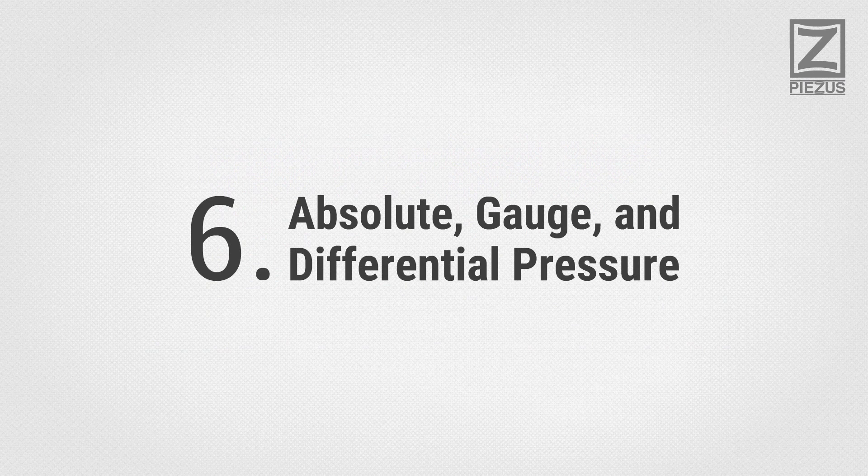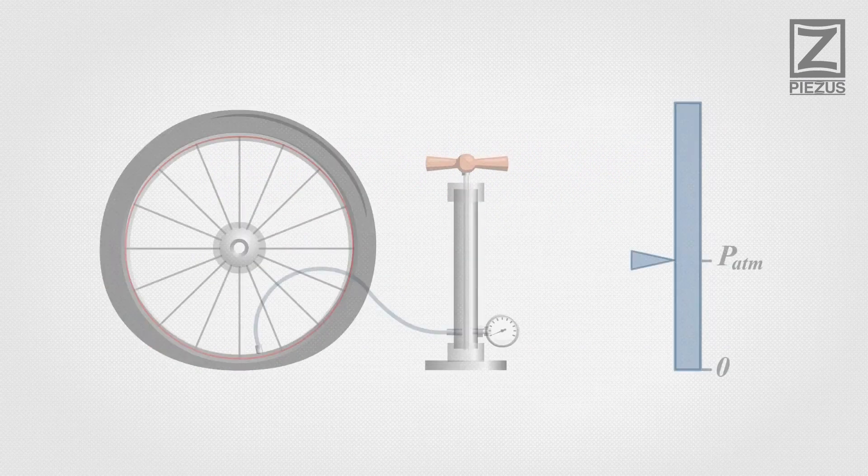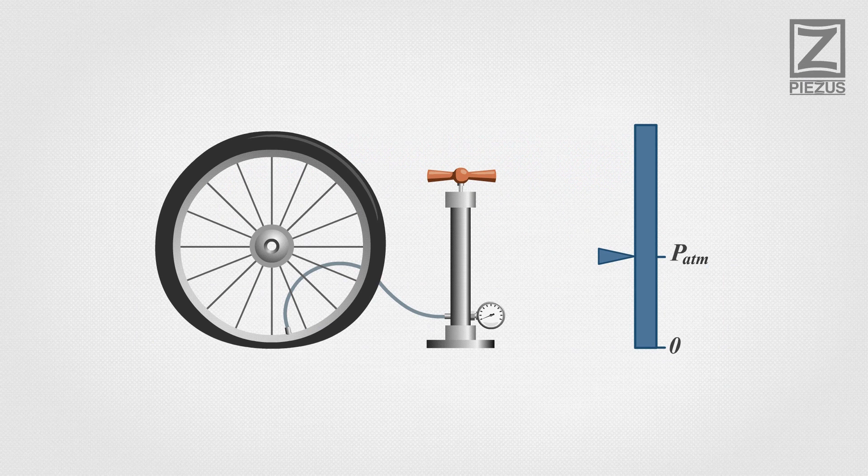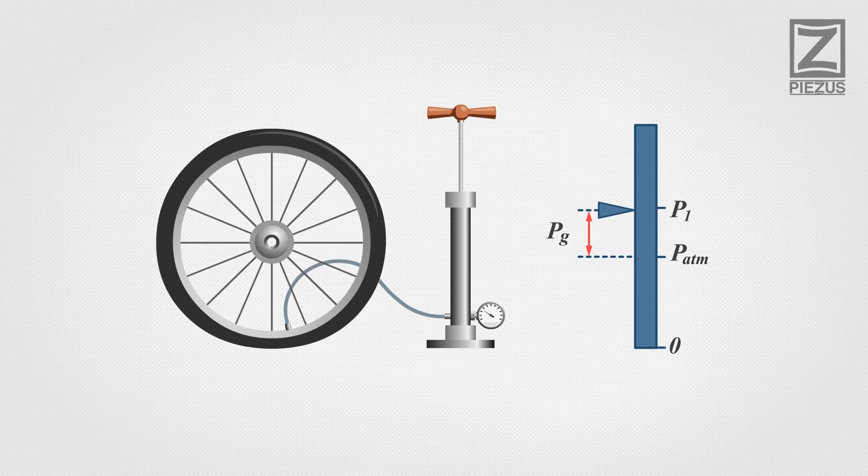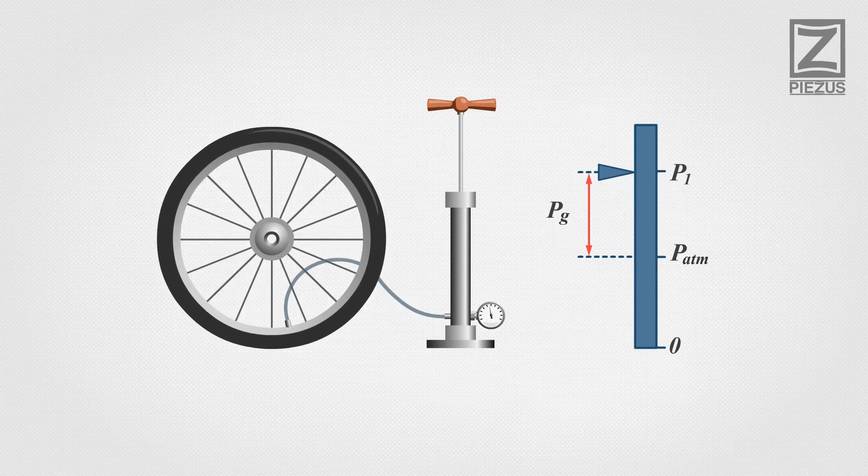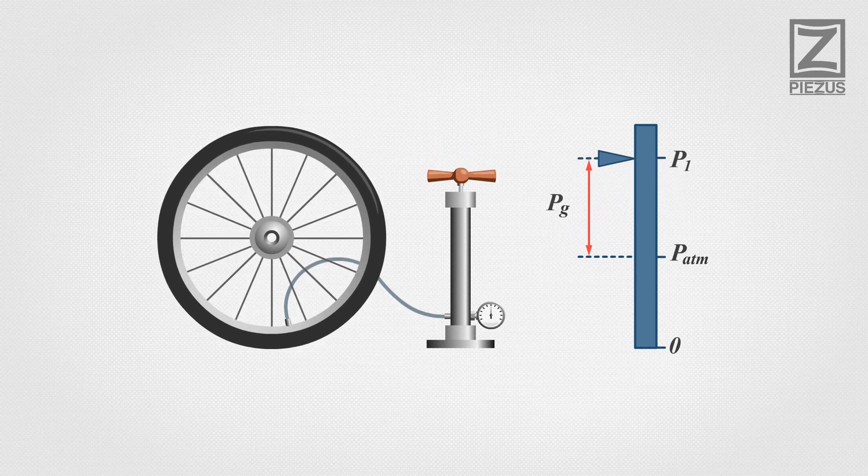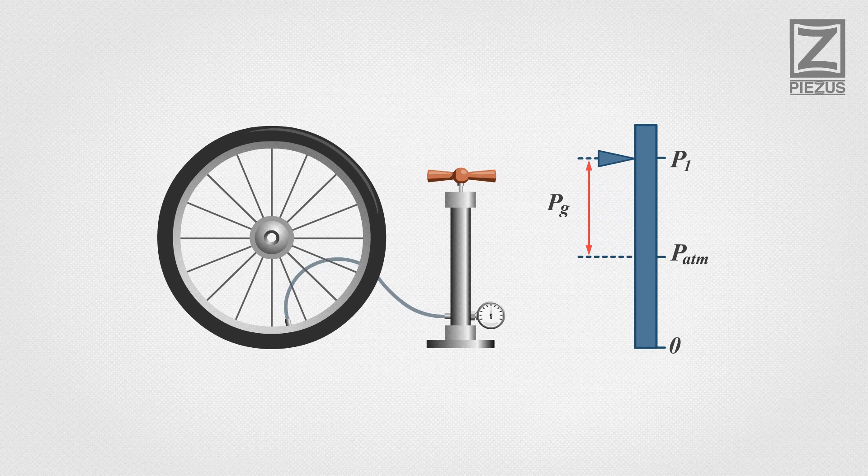Absolute, gauge, and differential pressure. Many everyday pressure measurements are usually made relative to ambient air pressure. This is the way to measure blood pressure or a vehicle tire pressure. Such a measurement is called gauge pressure. Zero gauge pressure would mean atmospheric pressure.